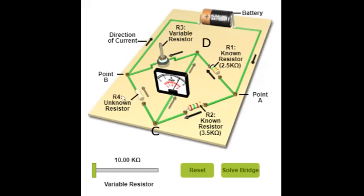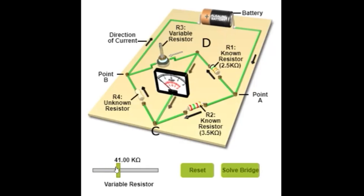We use this circuit to find the value of the unknown resistance. The variable resistance R3 should be changed in such a way that the galvanometer shows zero deflection. Currently, current is flowing through the galvanometer from B towards D. As you change the value of R3, the current through the galvanometer decreases. At one point, the deflection becomes zero — meaning current is not flowing through the galvanometer.